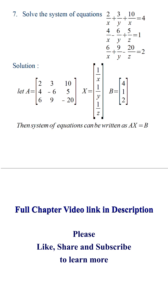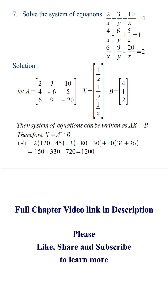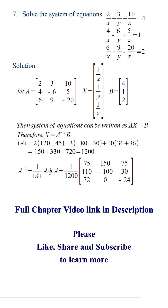To find the solution we have to find out X, which is equal to A inverse of B. For A inverse, first we'll find out the determinant of A, which is equal to 1200. Then we can find out the cofactors of A, and from that we can find out A inverse. Then we can substitute A inverse and B in X is equal to A inverse B.